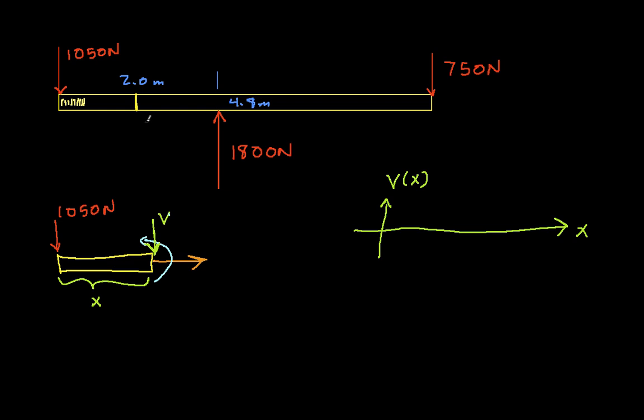As long as my cut, as long as x is such that x is less than 2 meters, I'm cutting somewhere in this part of the beam. And so the picture is going to look essentially the same. So I choose a position x to cut. We'll start by assuming that it's between 0 and 2 meters.